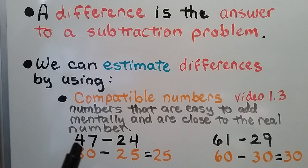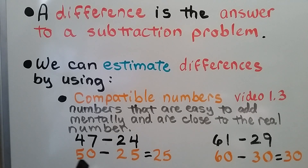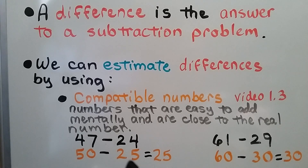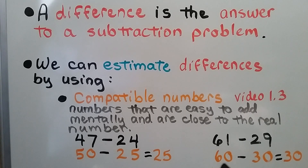If we had to subtract 47 minus 24, we could use compatible numbers. 47 is close to 50, and 24 is close to 25. We could do 50 minus 25, and that would be 25. If we had to do 61 minus 29, we could do 60 minus 30, because 61 is close to 60 and 29 is close to 30, and it would equal 30.